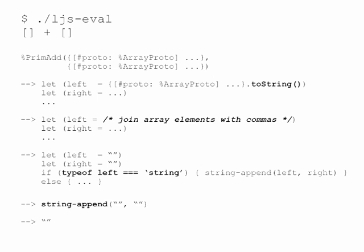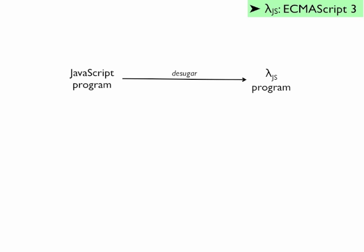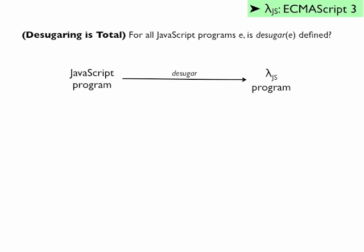We've designed LambdaJS and built desugar. A basic question we should ask is, is desugar a total function? For all JavaScript programs e, is desugar of e defined? Since LambdaJS is so small, it's easy to write a little 100-line LambdaJS interpreter, and we did that.